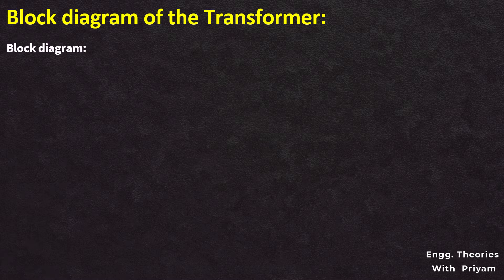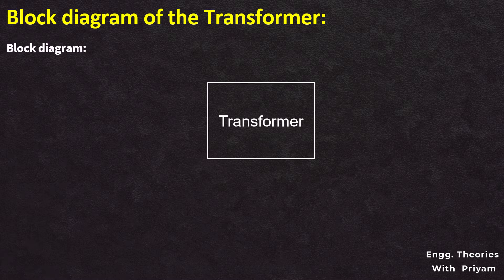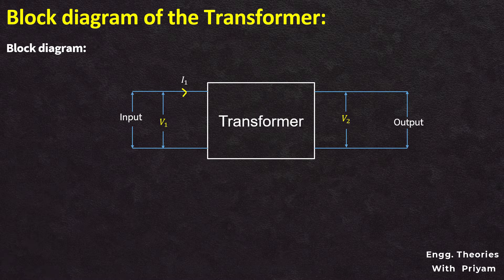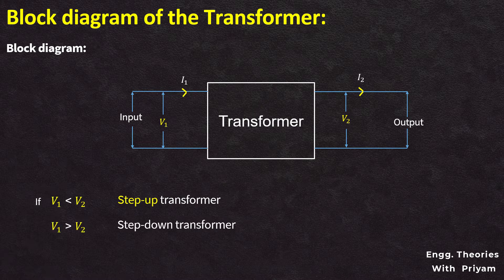The transmission voltage is then stepped down in many stages for distribution and utilization by domestic, commercial, and industrial consumers. For the basic configuration of a transformer, every transformer is equipped with an iron core laminated with steel bands. From the block diagram, a transformer has two sides: the primary side where the input is provided, and the secondary side where the output is generated and the load is connected. If the secondary voltage V2 is higher than primary voltage V1, it is a step-up transformer; if V2 is lower than V1, it is a step-down transformer; and if V1 equals V2, it is a 1:1 ratio transformer, frequently used for electrical isolation.